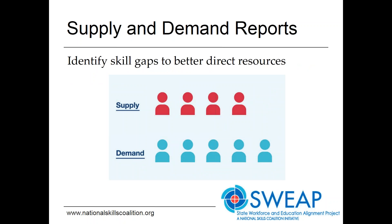Supply and demand reports compare the supply of newly trained workers with employer demand as measured by job openings, with information broken down by education level and field. They answer questions such as: where are the skill gaps, and how many more workers should be trained? With this information, officials can better direct investments to increase capacity where it is needed.